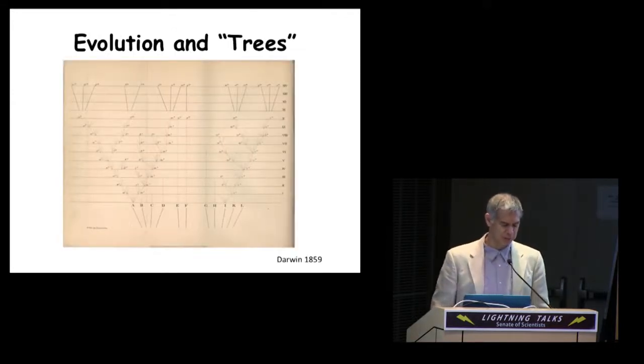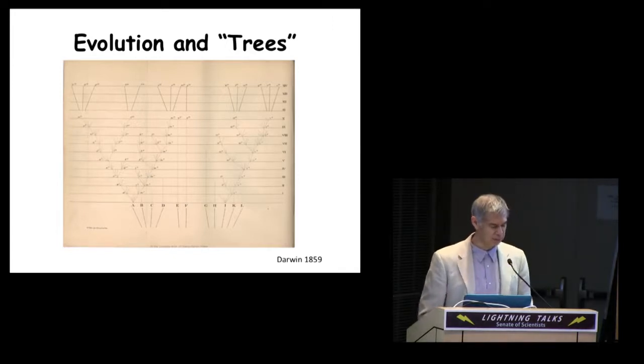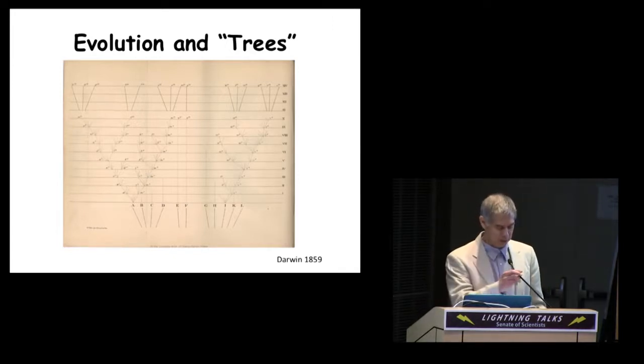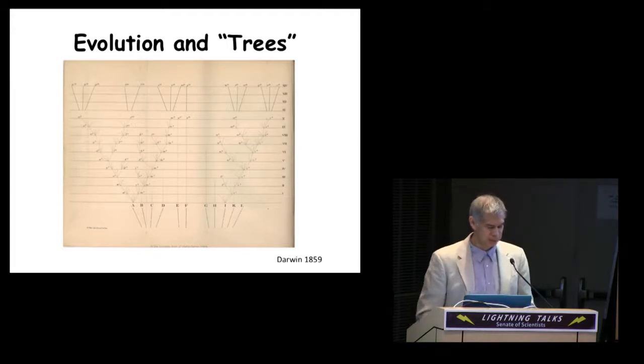One of the grand challenges of the Smithsonian is understanding and sustaining a biodiverse planet, and ever since Darwin, biologists have considered evolution the engine of biodiversity. As a result, they've adopted the model of a branching tree for analyzing and interpreting their data.